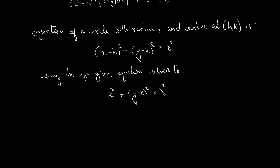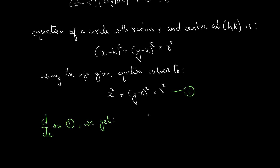Here R is a fixed constant and k is the only arbitrary constant. We need to differentiate this equation with respect to x one time to eliminate k. The differential equation will be first order since we have only one arbitrary constant. Let's call this equation 1.